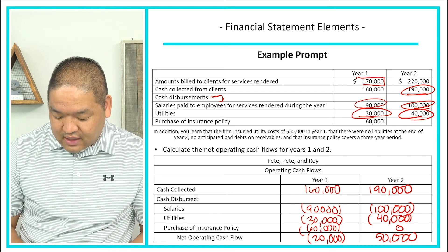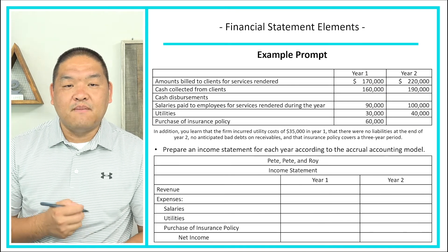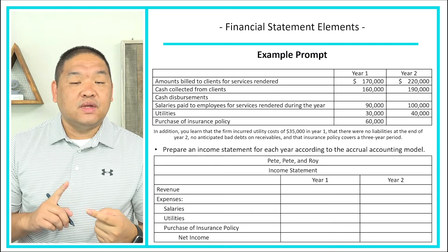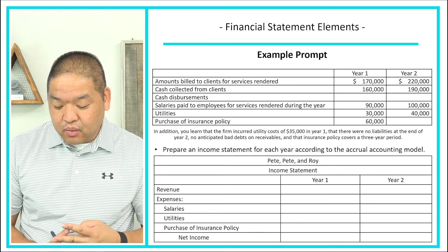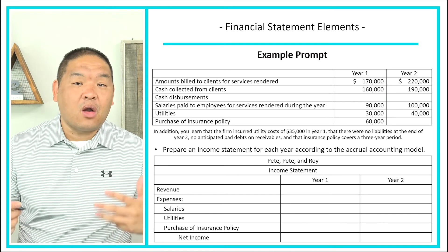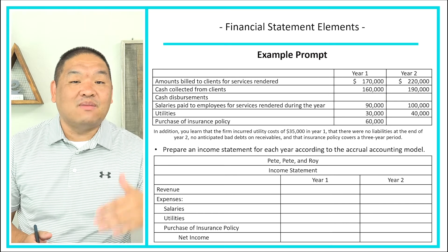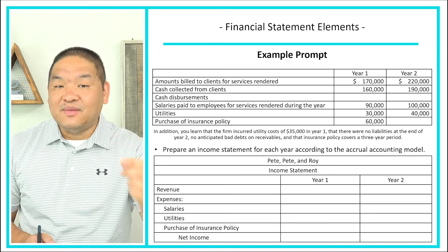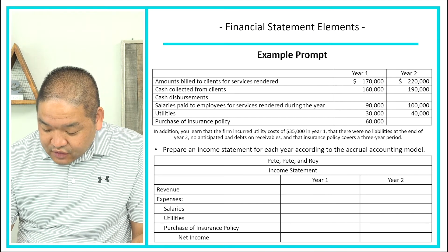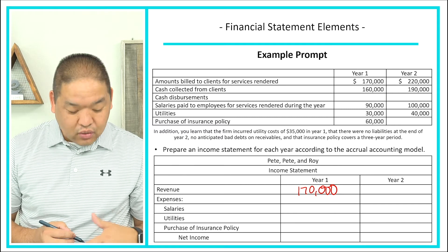We need to prepare an income statement for each year under the accrual method. In year one, the question is how much revenue did we earn? We billed our clients $170,000 for services rendered — that is our revenue for the period. Even though we only collected $160,000, we record $170,000 because that's how much we earned. The uncollected $10,000 will likely be received next year.